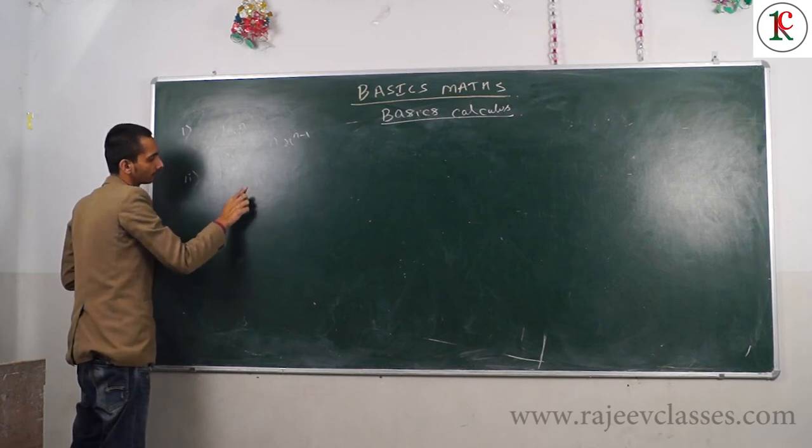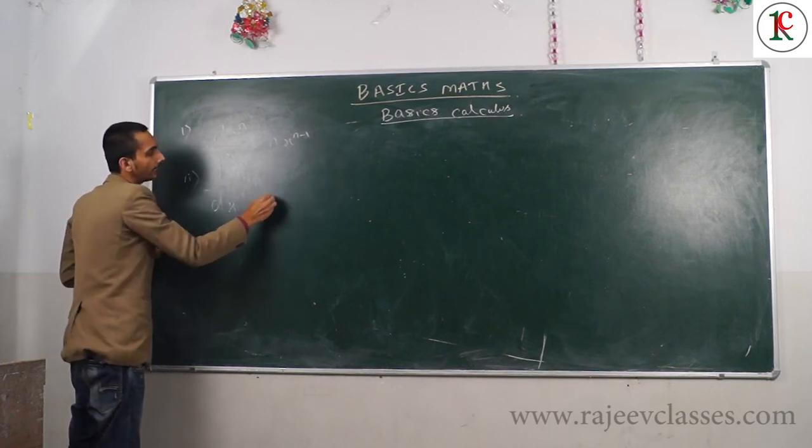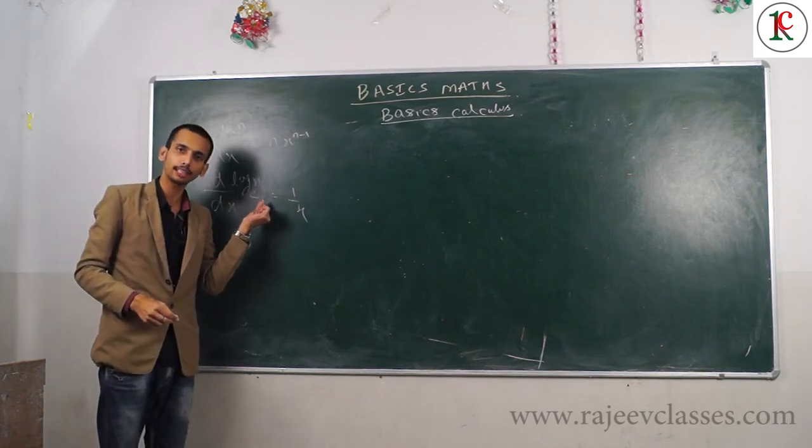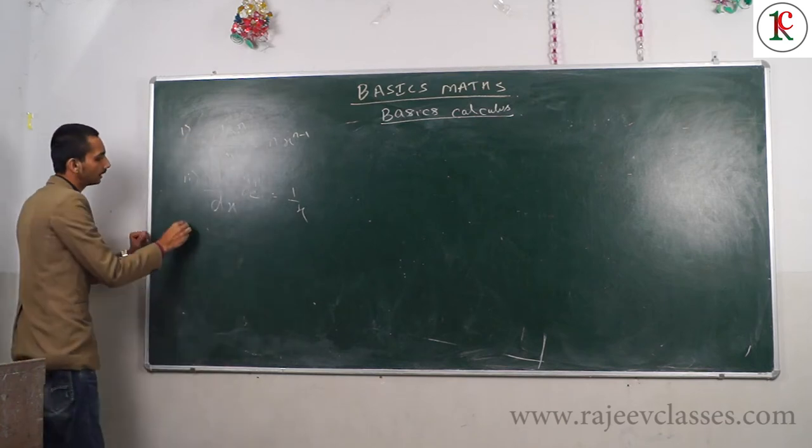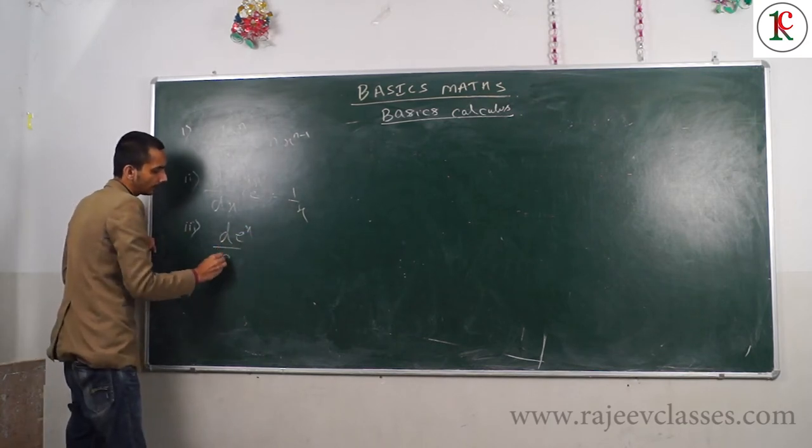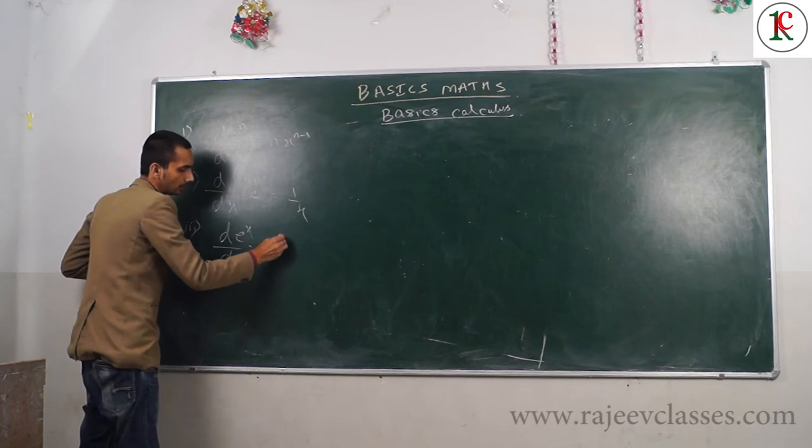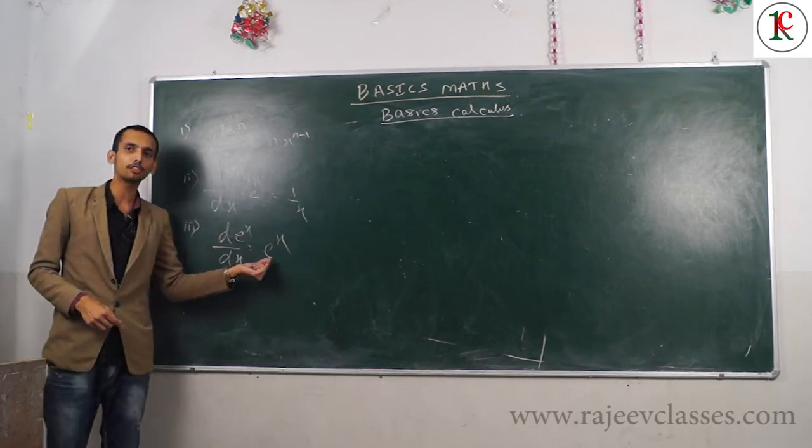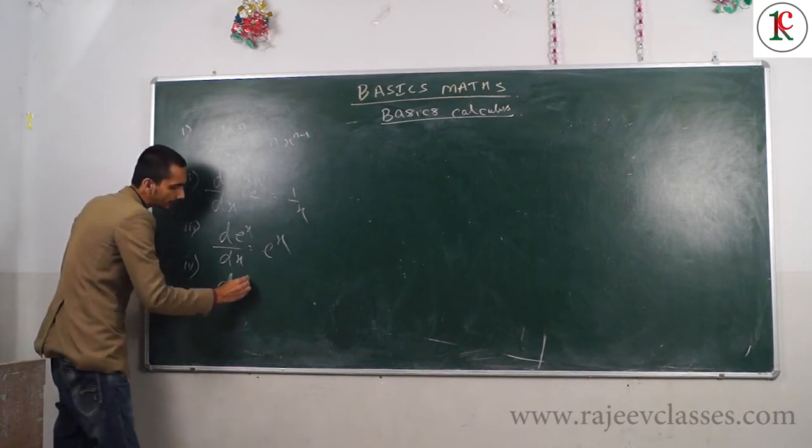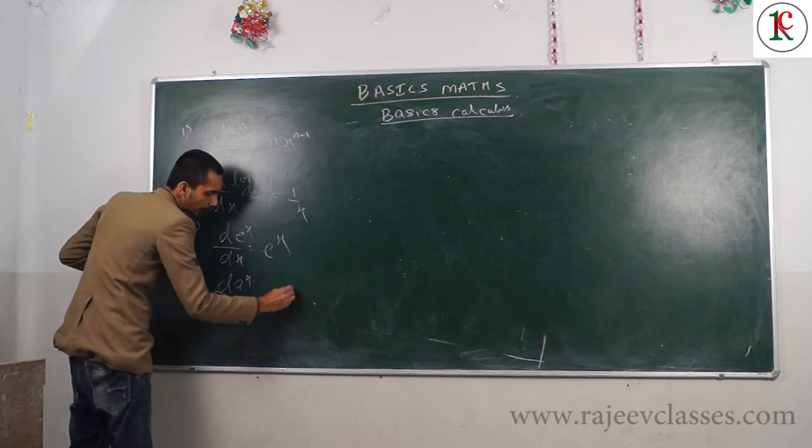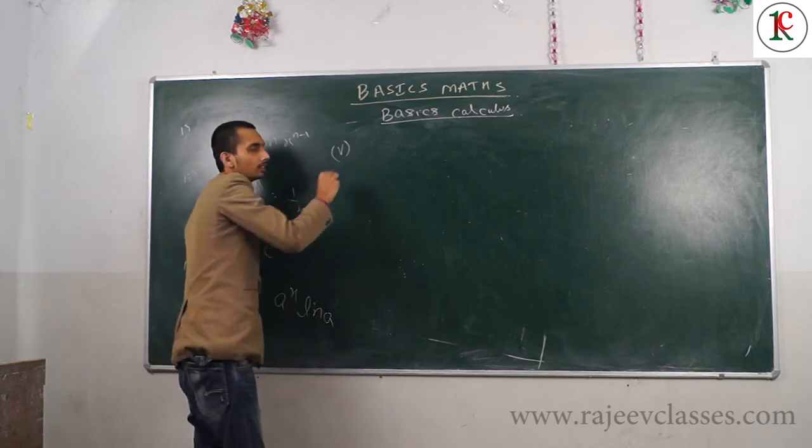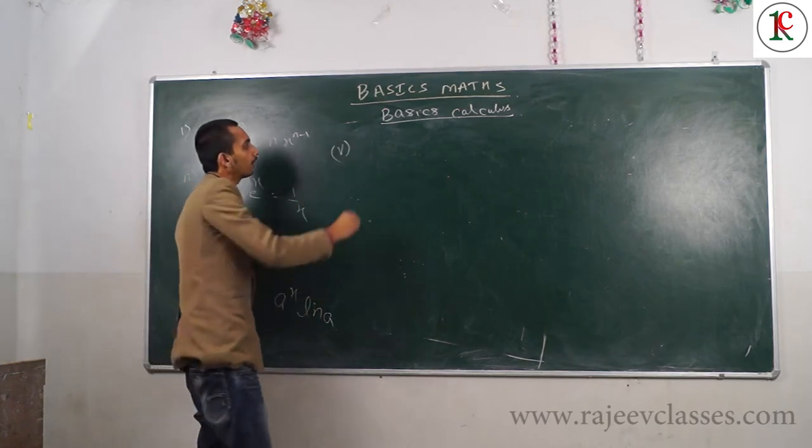For exponential functions, the differentiation of e to the power X is e to the power X itself. The differentiation of a to the power X is a to the power X times ln a.